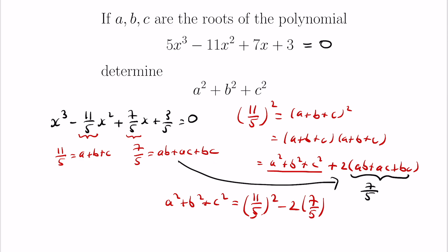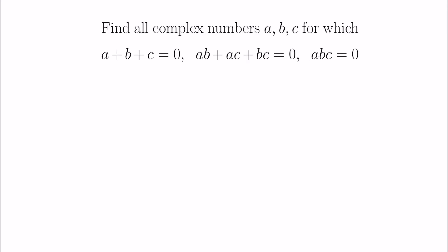Let's look at a different type of example of the use of Vieta's formula. So in this problem we're going to have a backwards situation where here we're given information about a system of polynomial equations that a bunch of variables satisfy and we'll be interested in figuring out what the variables are. So the problem asks to find all complex numbers a, b, and c for which a plus b plus c is zero, ab plus ac plus bc is zero, and abc is zero.